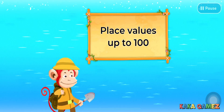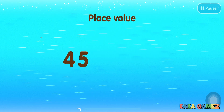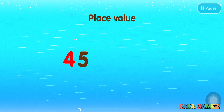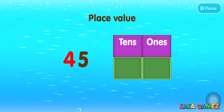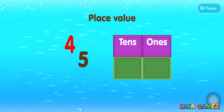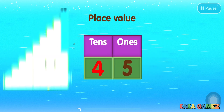Let's start the lesson about place values up to 100. Look at the number 45. What is the place value of the 4 in 45? We've already learned that 45 can be decomposed as having 4 tens and 5 ones, or 4 is in the tens place and 5 is in the ones place.